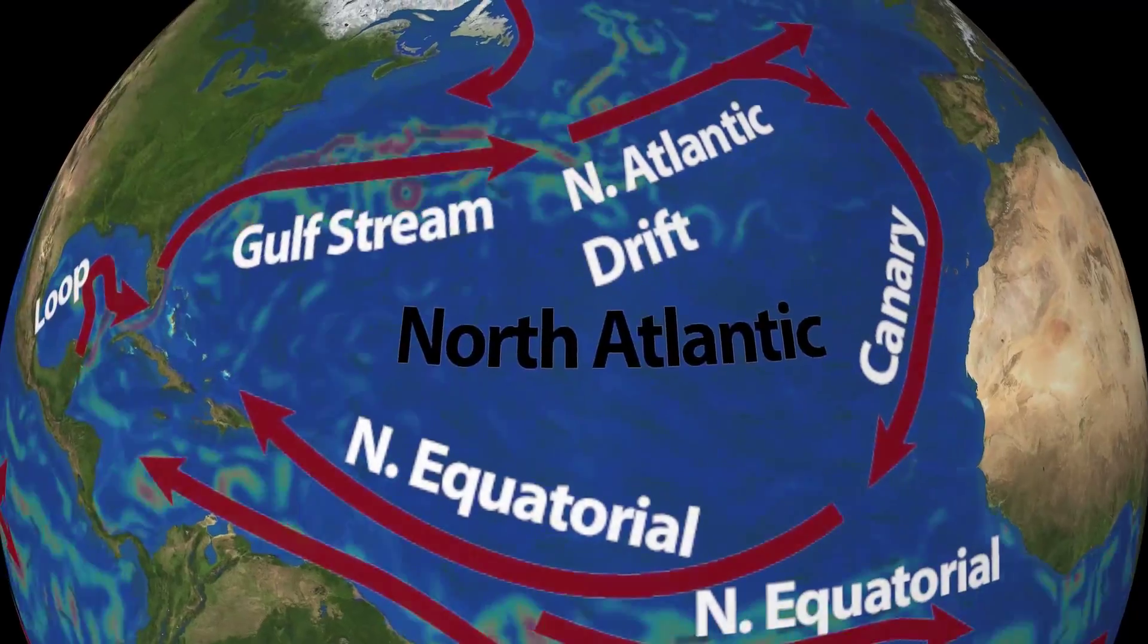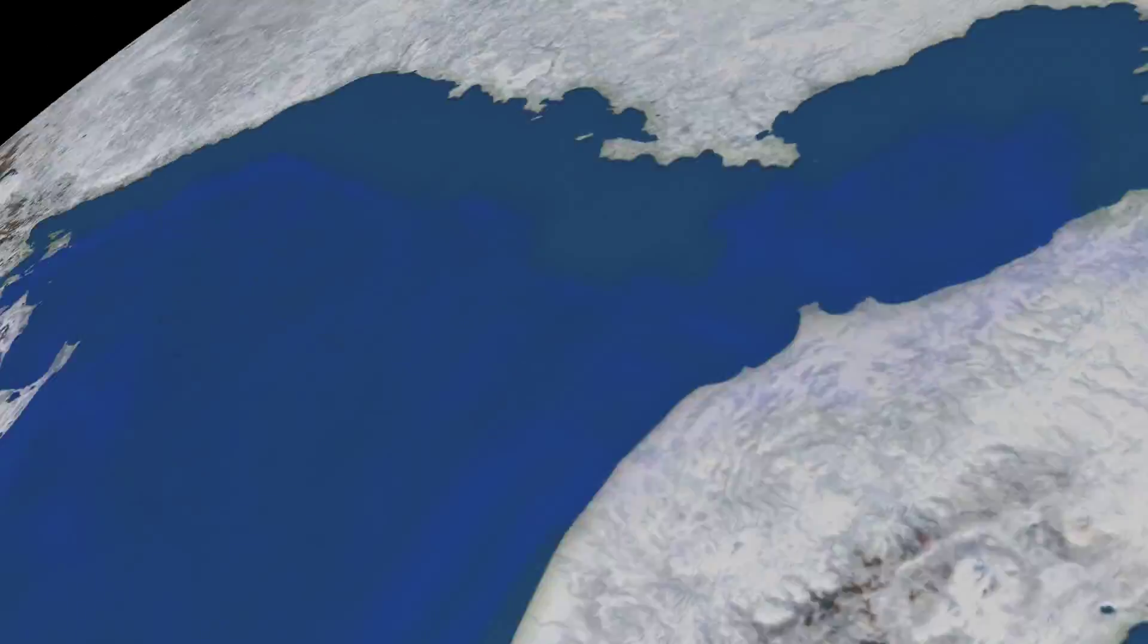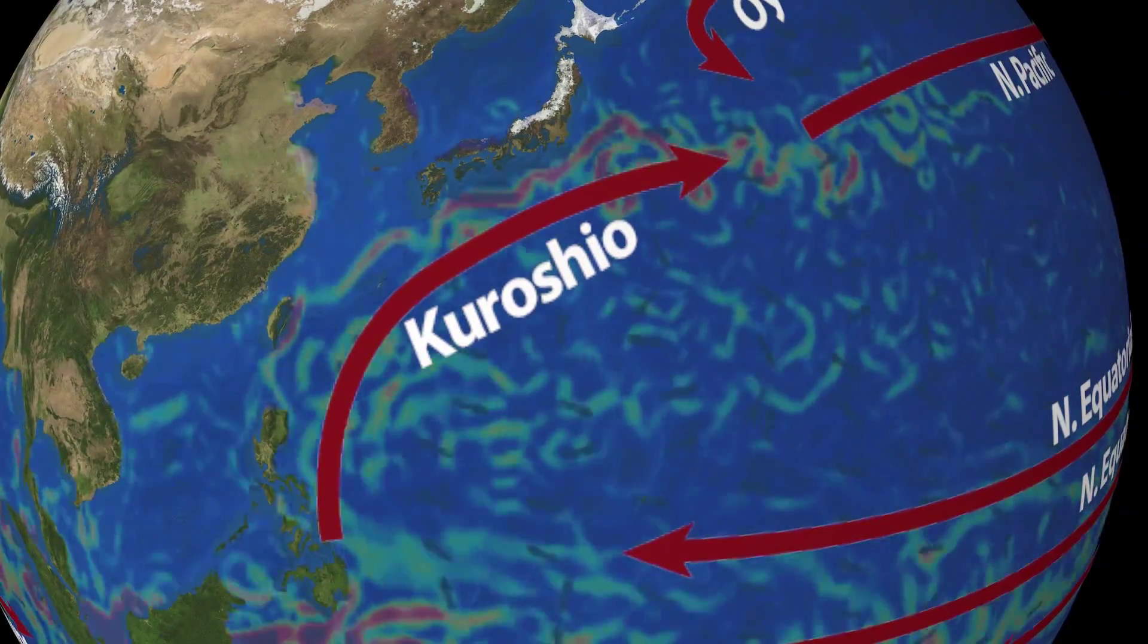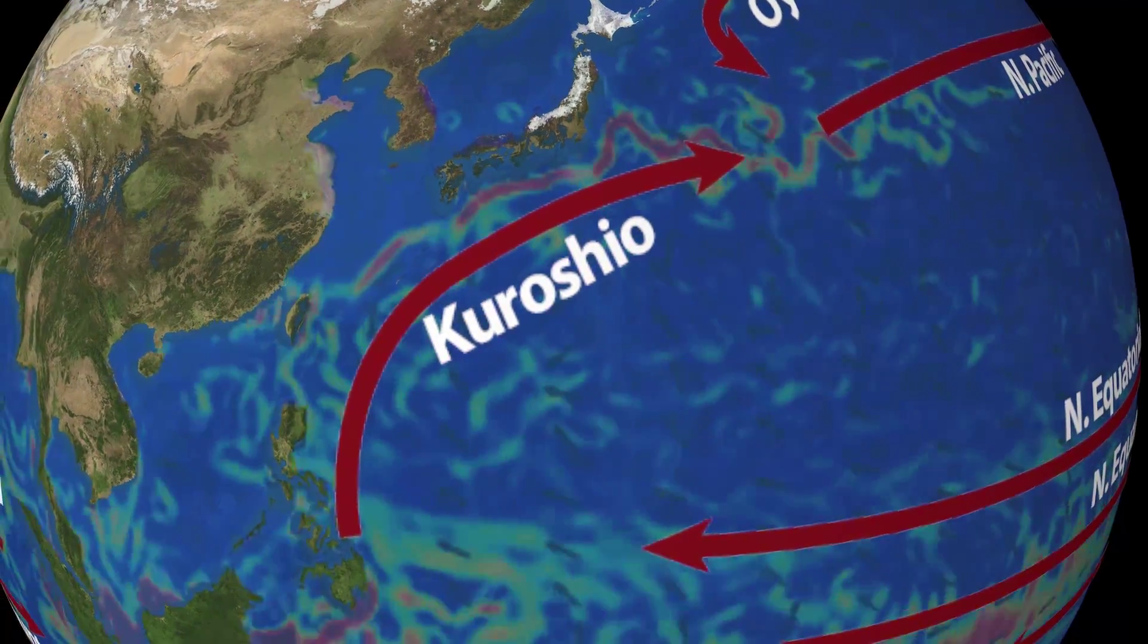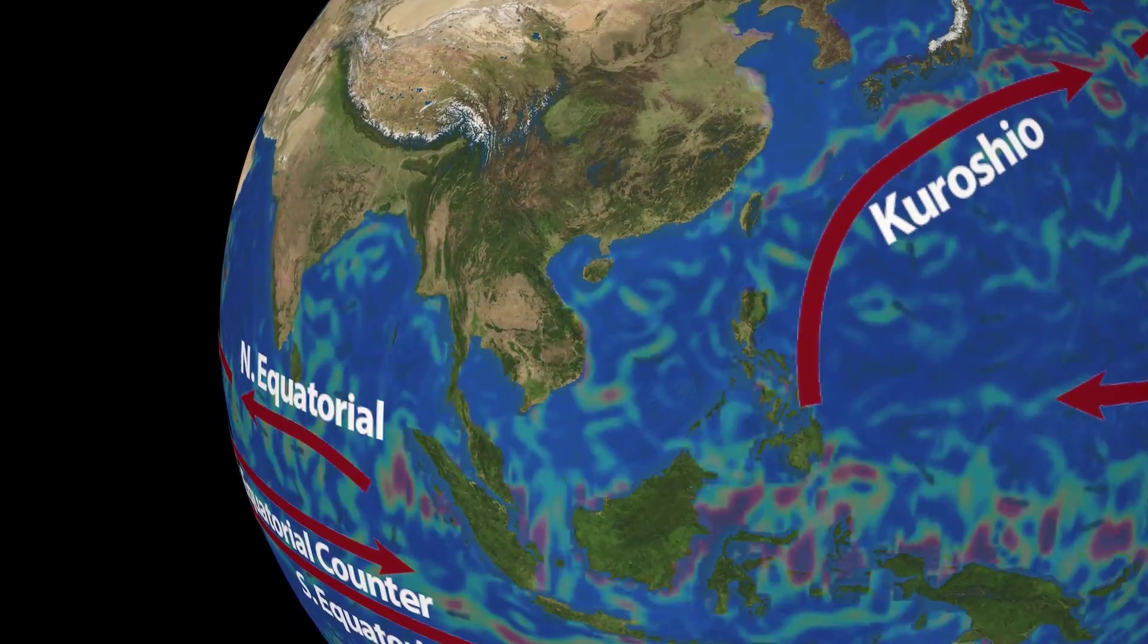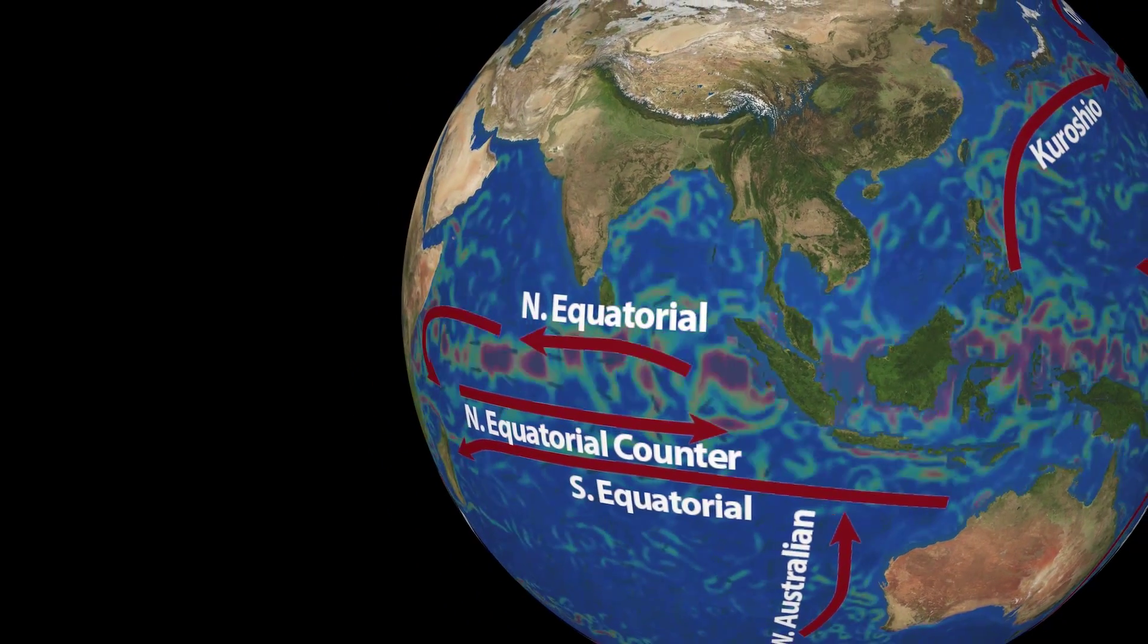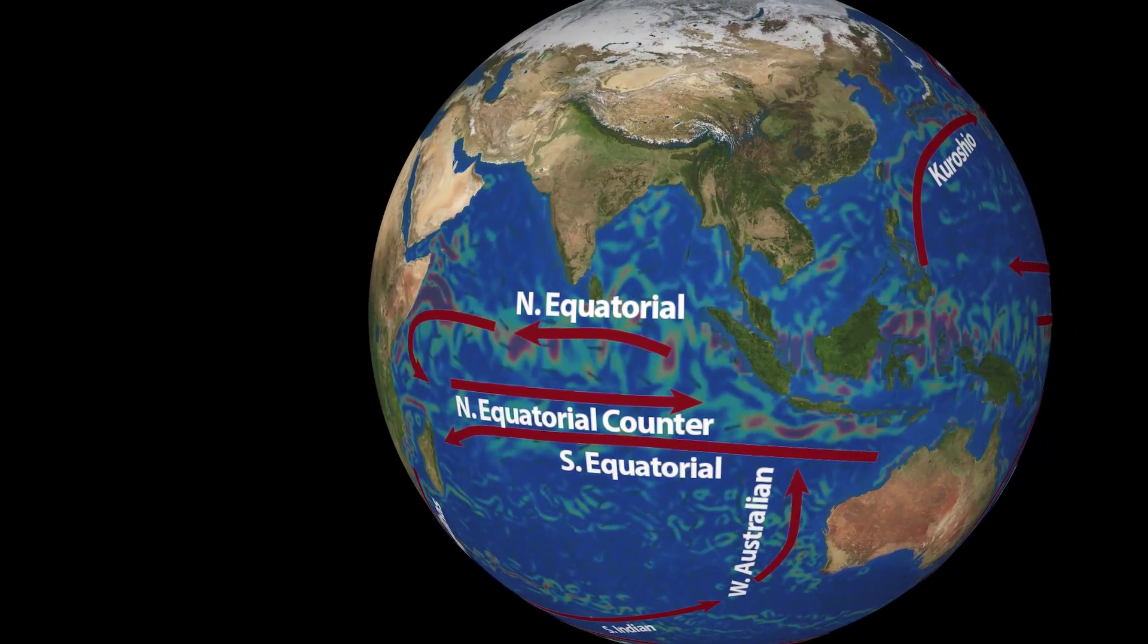For example, the Gulf Stream is the dominant western boundary current in the North Atlantic, while the Kuroshio is the dominant western boundary current in the North Pacific. The Brazil current and the East Australian current are the dominant western boundary currents in the South Atlantic and South Pacific. The Agulhas current is the dominant western boundary current in the Indian Ocean.